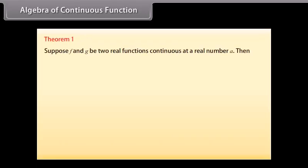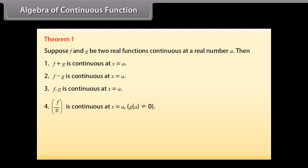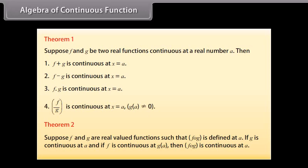Algebra of Continuous Functions — Theorem 1: Suppose f and g are two real functions continuous at a real number a. Then: 1. f + g is continuous at x = a; 2. f − g is continuous at x = a; 3. f · g is continuous at x = a; 4. f/g is continuous at x = a, provided g(a) ≠ 0. Theorem 2: Suppose f and g are real-valued functions such that f ∘ g is defined at a. If g is continuous at a and f is continuous at g(a), then f ∘ g is continuous at a.